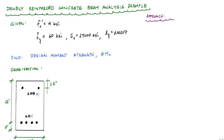I have two number eight bars as my compression steel and four number eleven bars acting as my tension steel. The approach I like to take when analyzing a reinforced concrete beam is first to always draw the strain and stress profiles. This is an important step because it lets me visualize the equations I'm looking for, and it reminds me that the strains the section is experiencing really govern design moment strengths.